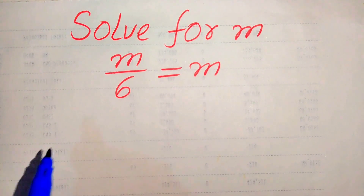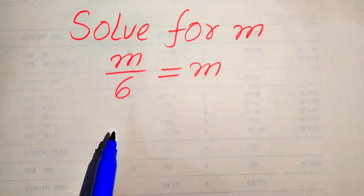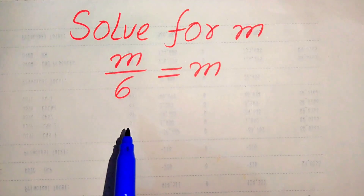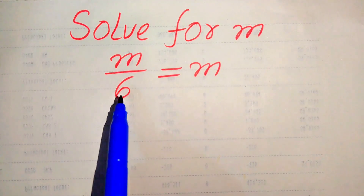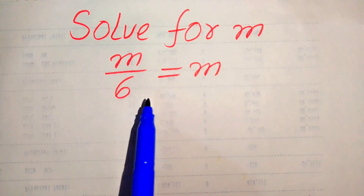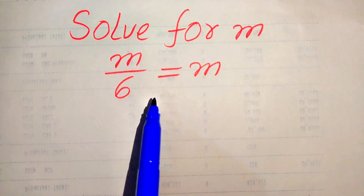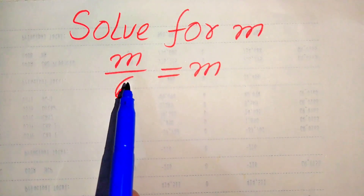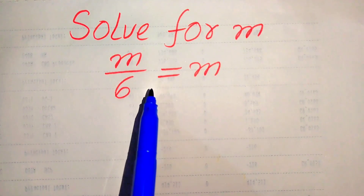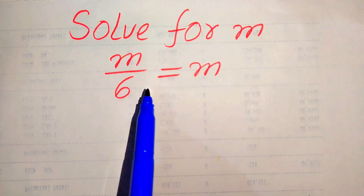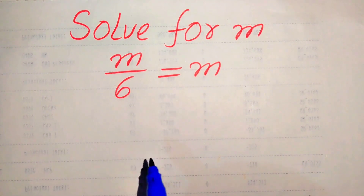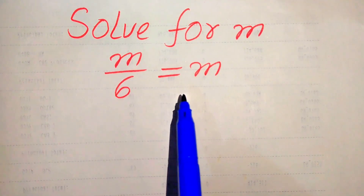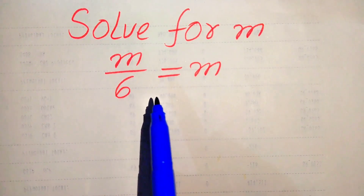Hello everyone. How to solve this problem for the values of m, if we have m over 6 equals m. You see here the exponent of both sides of m is 1, which means that this is a linear equation. So in this question we solve a linear problem.